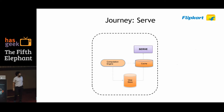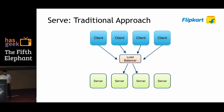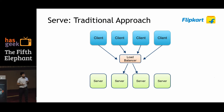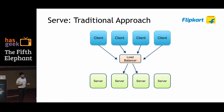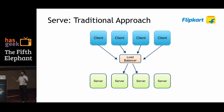Let's move to our server layer and see what funny things happen there at scale. The traditional approach: you have clients, a bunch of server nodes, and typically a hardware load balancer in between. The load balancer advertises a virtual endpoint to which clients connect, and behind the scenes it takes care of bringing machines in and out of rotation and distributing requests among server nodes.